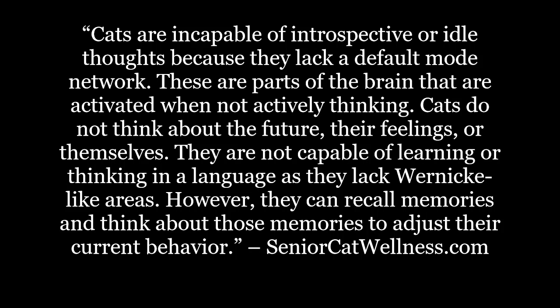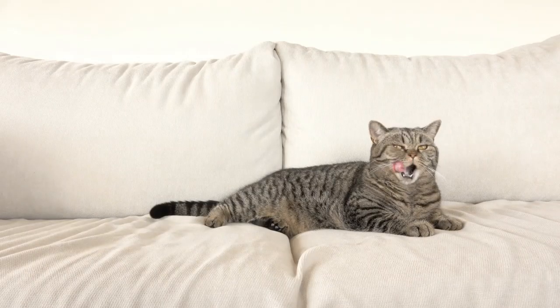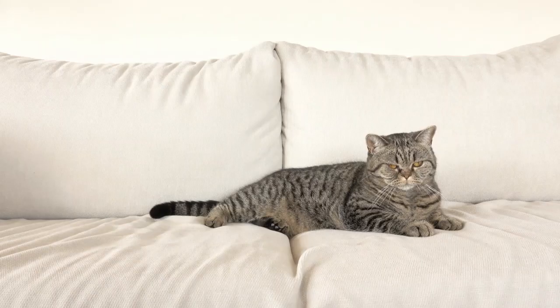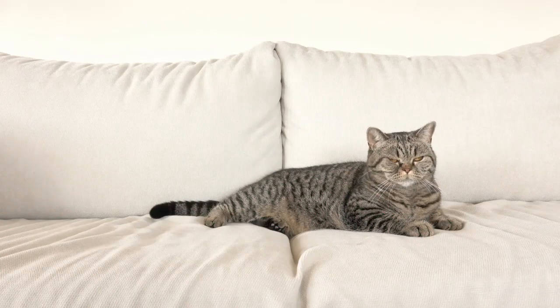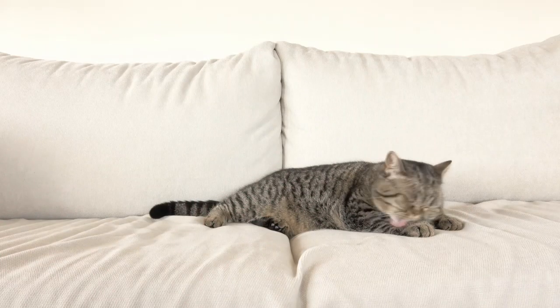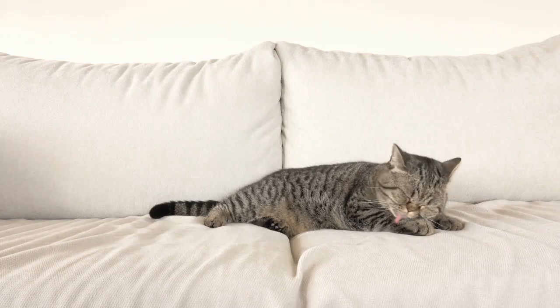However, they can recall memories and think about those memories to adjust their current behavior. Felines are quite simple. They react based on prior events, both good and bad. And while they don't have vivid memories like we do, they do have associations.